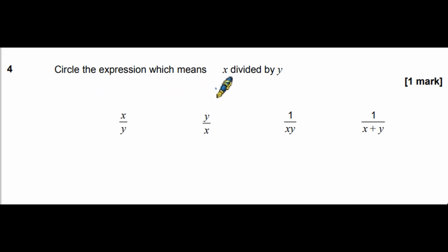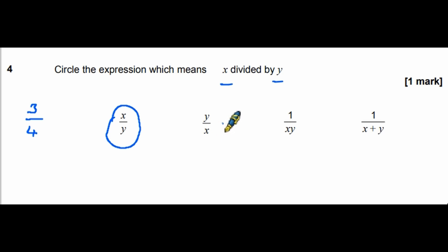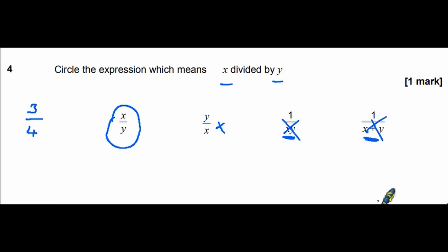Question 4: circle the expression which means x divided by y. If something is divided by something, we put it under the line — so 3 divided by 4 becomes 3 over 4, and x divided by y is x over y. The other options are y over x (wrong way around), 1 divided by xy, and 1 divided by x plus y — all have functions we're not being asked about.